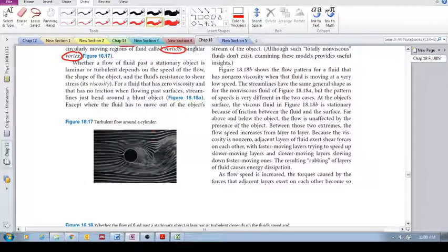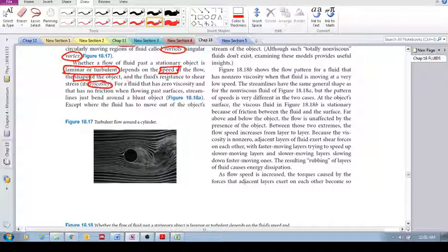Okay, now what determines laminar or turbulent flow? A few things. The first is the speed of the flow, number one. Number two, the shape of the object, the speed, the shape, and then its viscosity. The viscosity, which is simply its resistance to shear stress.